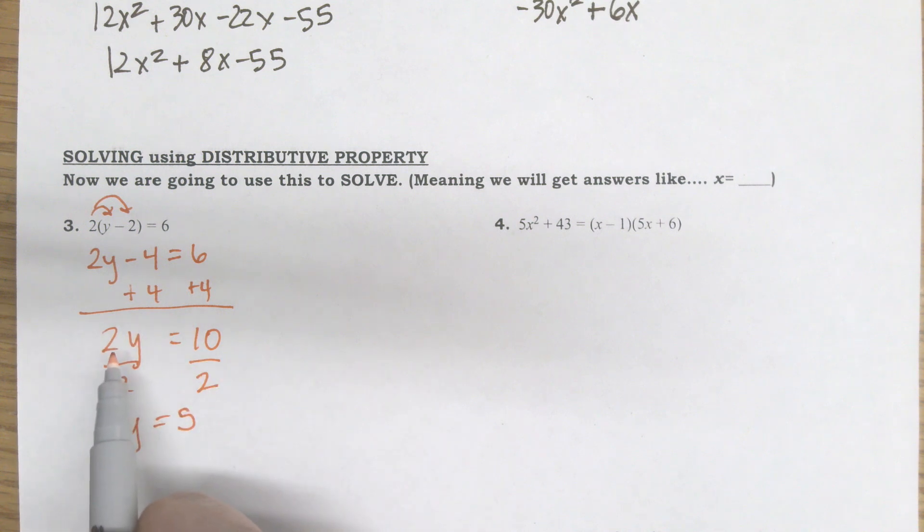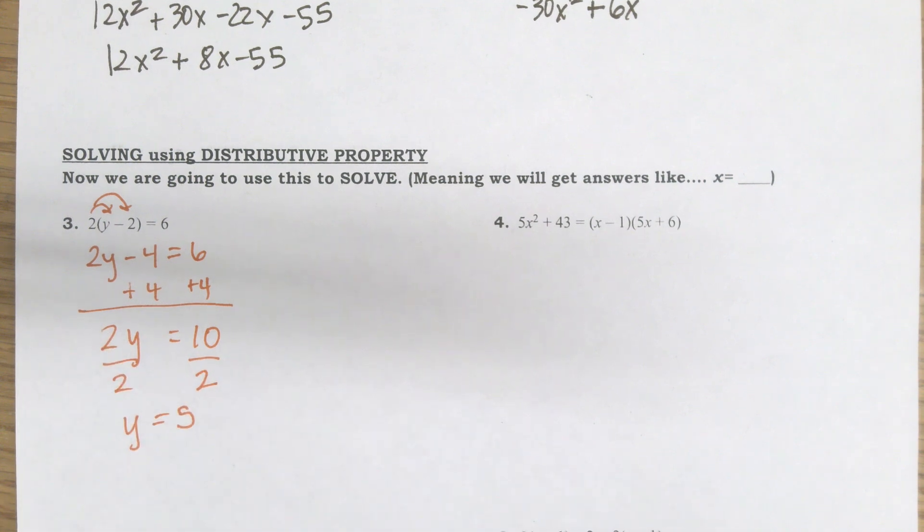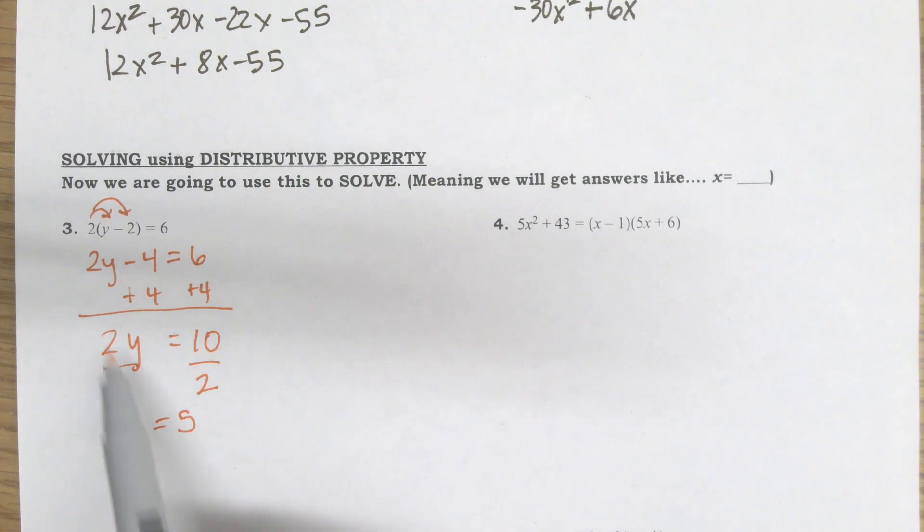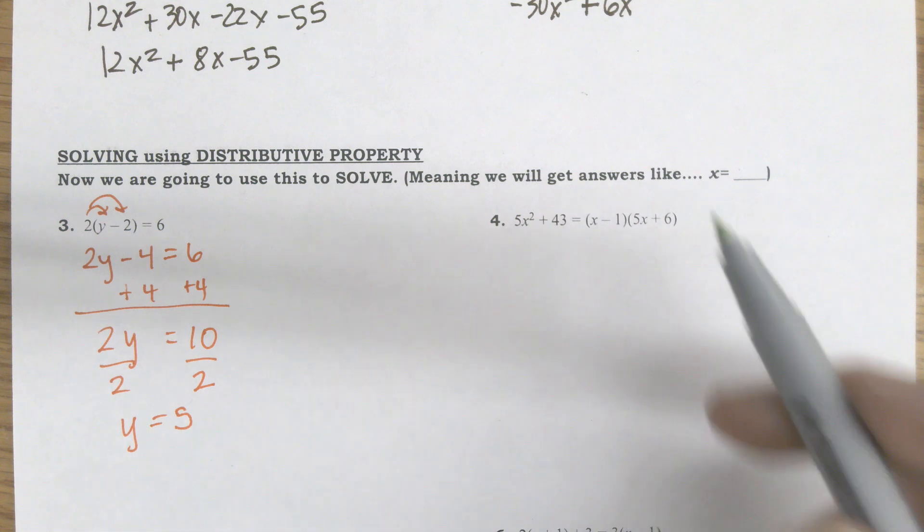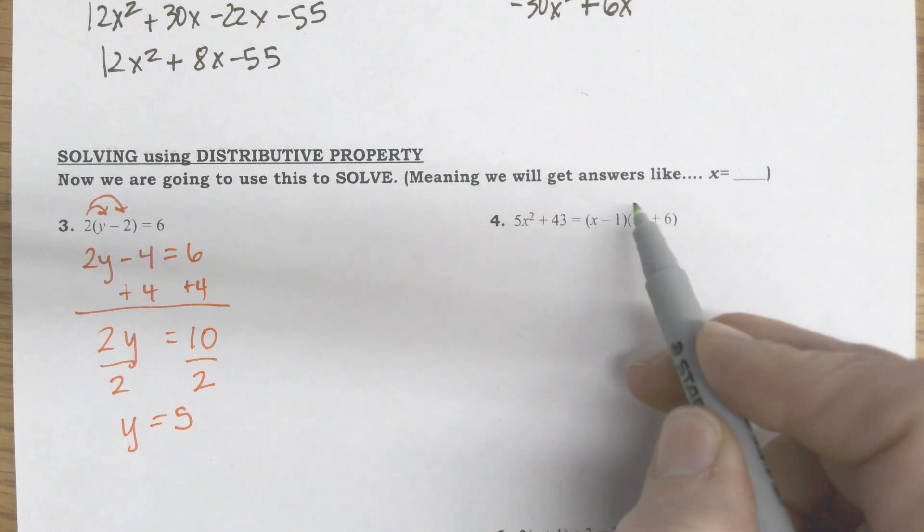Sometimes people can look at this a different way and they said, what do I multiply by 2 to get 10? So y would be 5. Or if I'm going to do it very algebraically, I would do the division. So that was a basic two-step with a single distributing, but sometimes you're going to have even more complicated where you'll have like a double distribute. So I'm going to go ahead and do that over here on this next one.